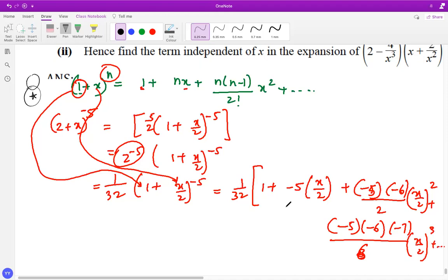I'm going to simplify this expression now. After you simplify, it is 1/32 times [1 - 2.5x, then this -2 gets cancelled and you get 5×3 is 15/4, so plus 15/4 x²...